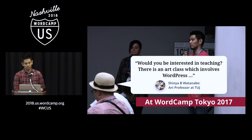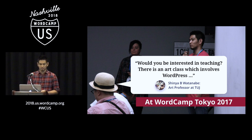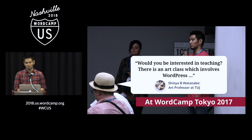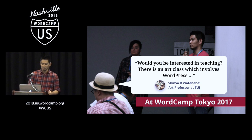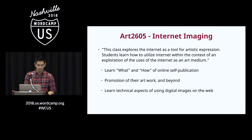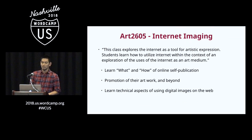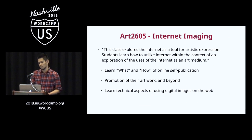At the end of the event, he asked me: would I be interested in teaching? There's an art class which involves WordPress. I thought, really — there's such a class? I said yes, and after a few discussions and some paperwork, I agreed to co-teach with him for the summer 2018 semester, a class called Internet Imaging. The course number starts with "art," so you can say it's an art course.